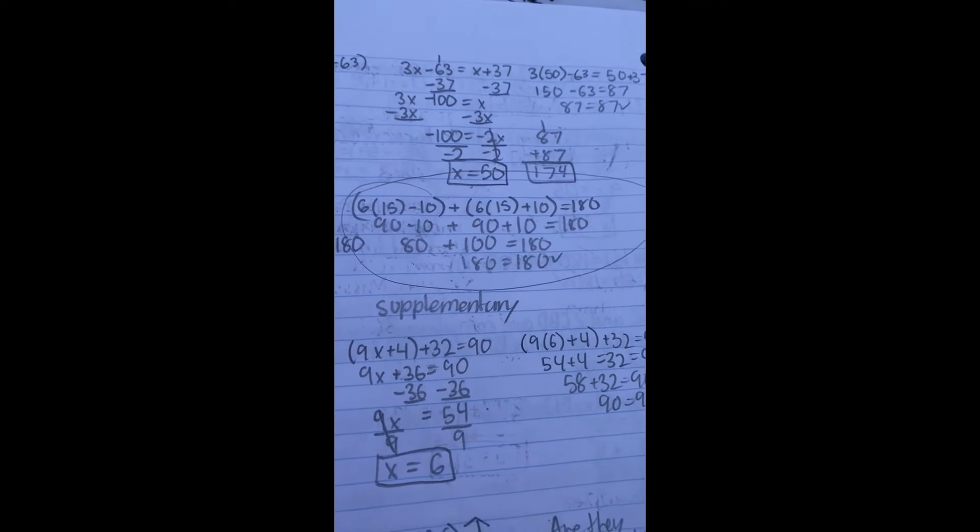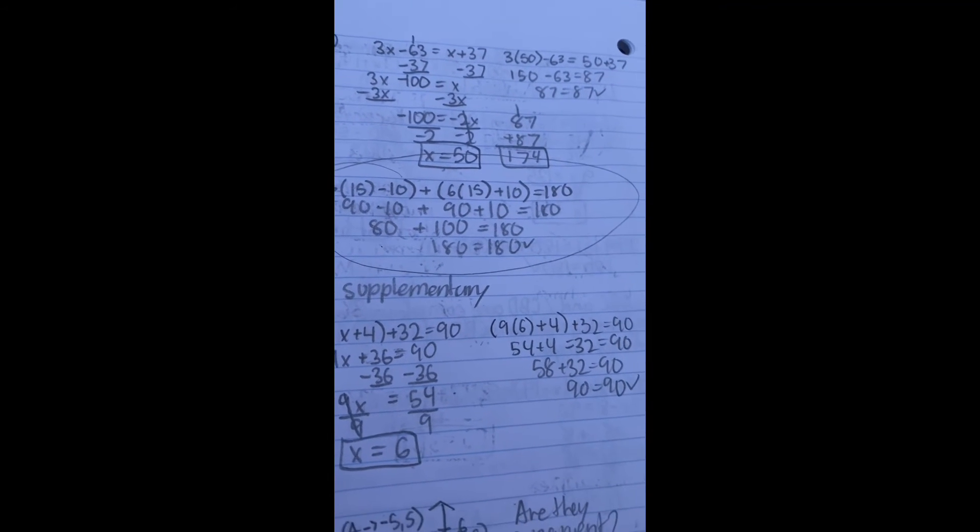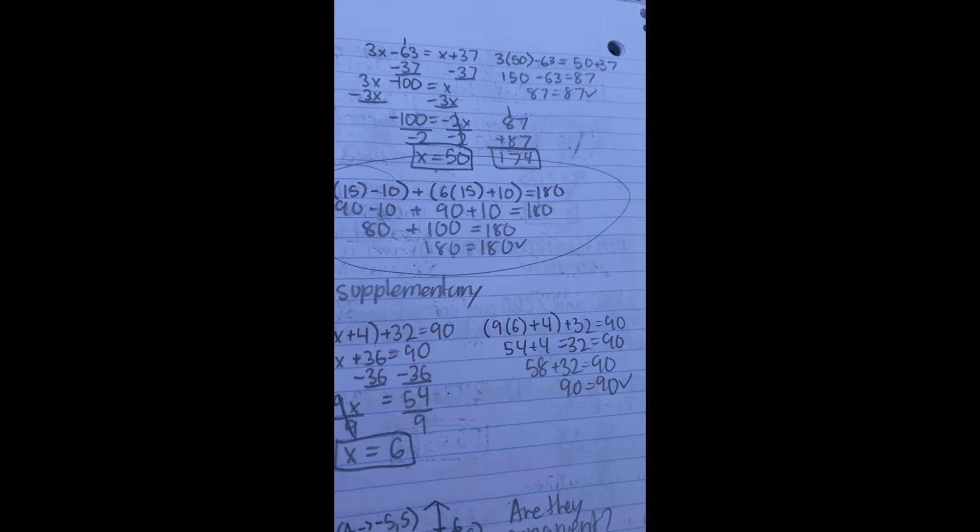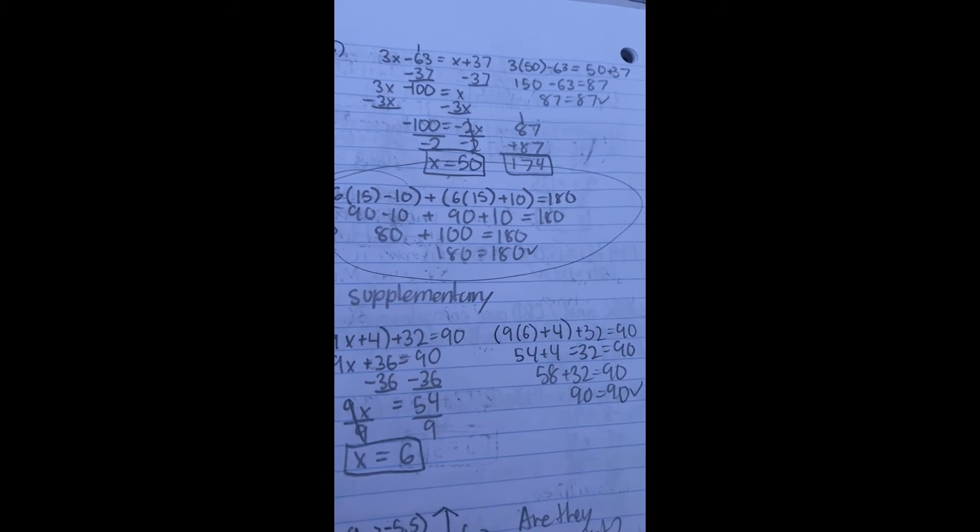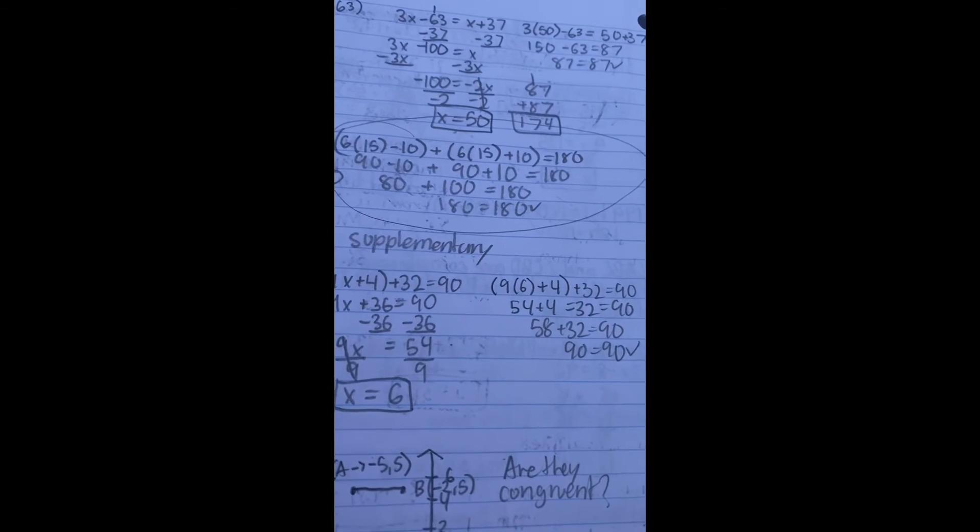6y minus 10 plus 6y plus 10 equal to 180. 12y equals 180 since both tens cancel each other out. So 180 divided by 12 is 15. 6 multiplied by 15 is 90 minus 10 is 80. 6 multiplied by 15 is 90 plus 10 is 100. And 80 and 100 together is 180.